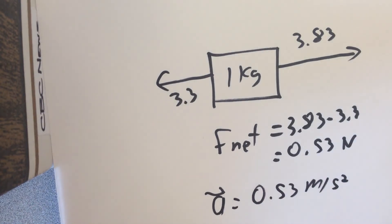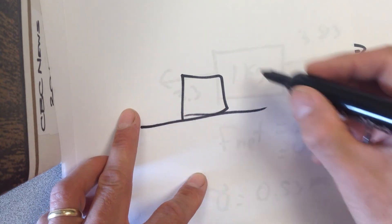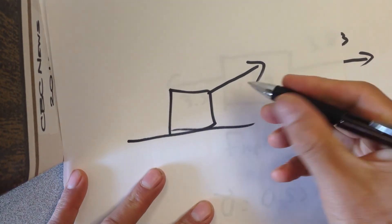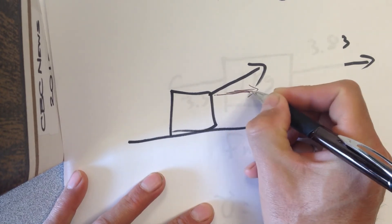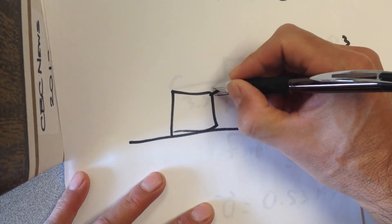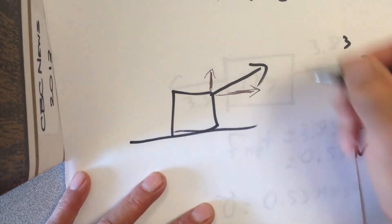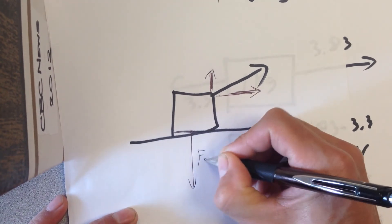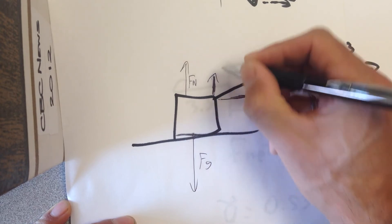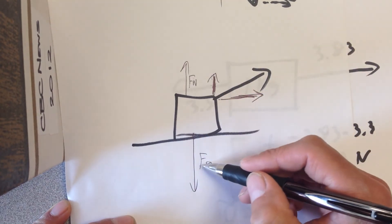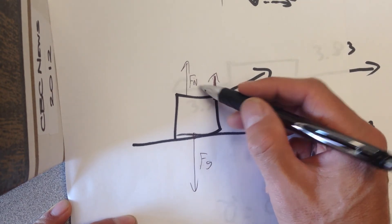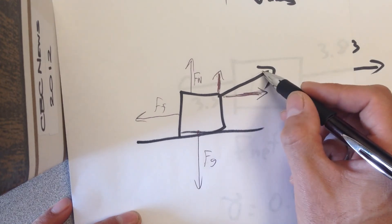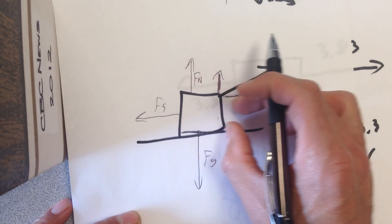To recap: when a force is applied to a block at an angle, we analyze it as two separate forces — one parallel to the surface that slides it forward, and one perpendicular that pulls it upward. We use the perpendicular component to find the reduced normal force, since gravity pulls down while the normal force and the perpendicular component push up together. We then use that normal force to find friction, and subtract friction from the parallel component to find the net force.